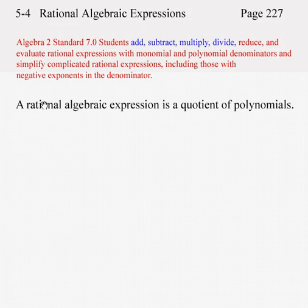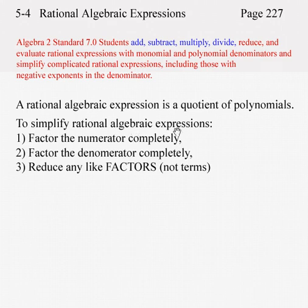First of all, a rational algebraic expression is a quotient of polynomials. To simplify rational algebraic expressions, our goal is to one, factor the numerator completely, two, factor the denominator completely,